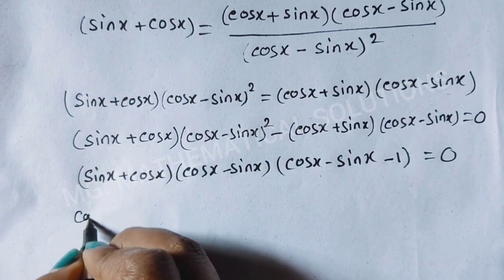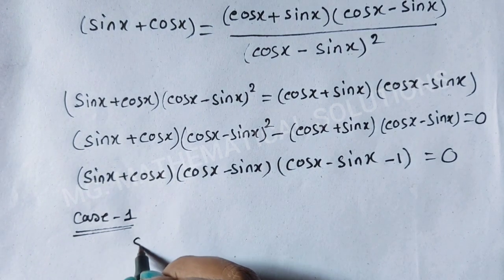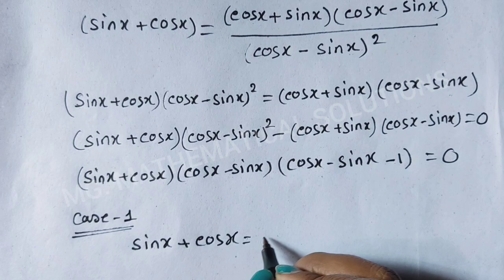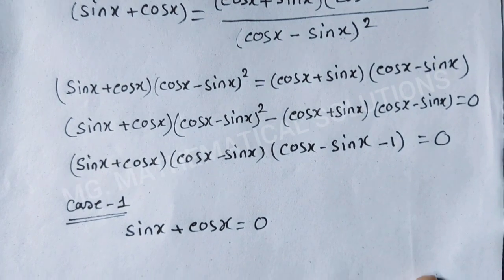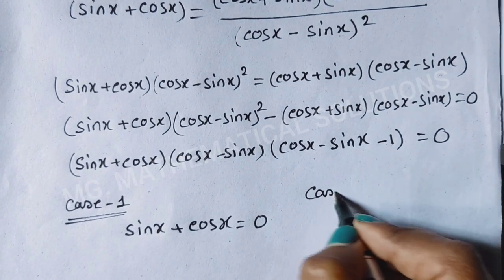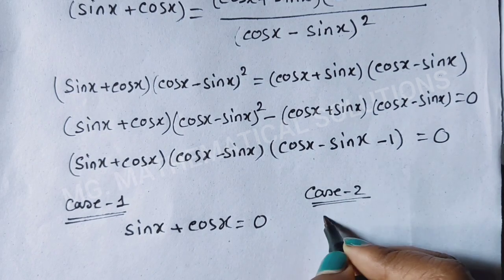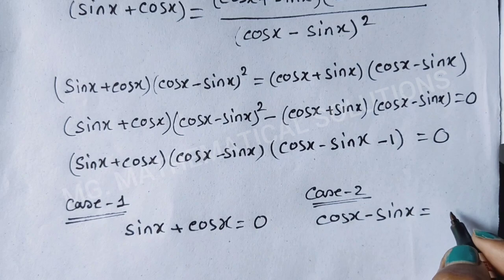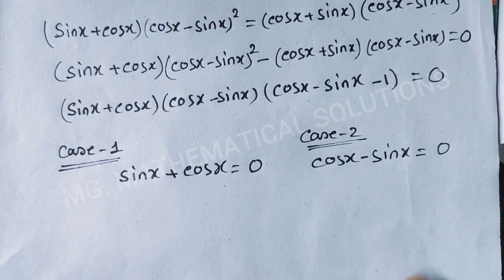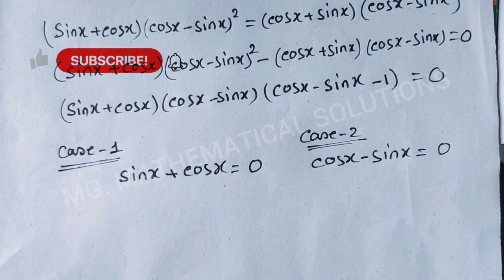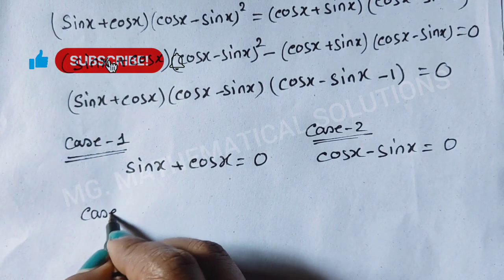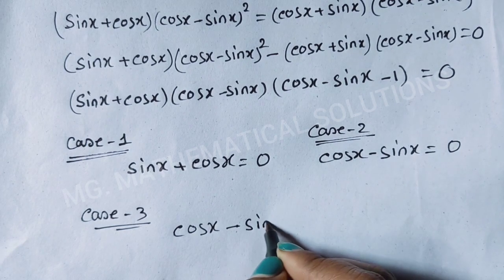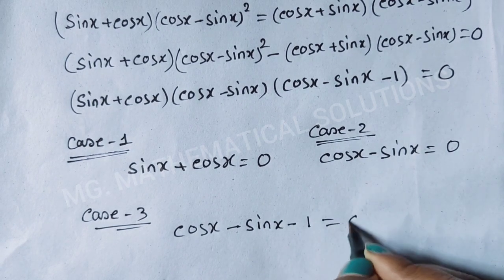Now we get three cases. Case 1: sin x + cos x = 0. Case 2: cos x − sin x = 0. Case 3: cos x − sin x − 1 = 0.